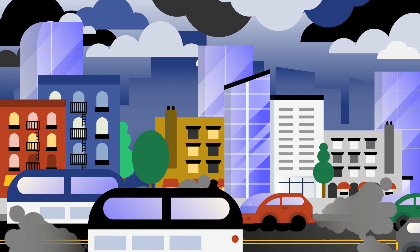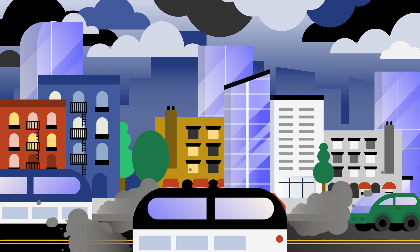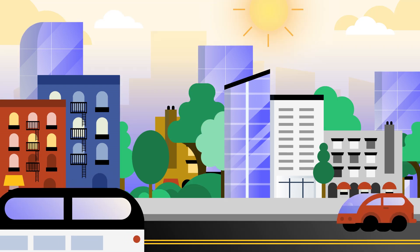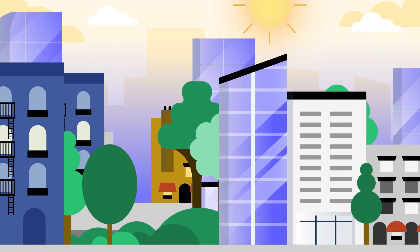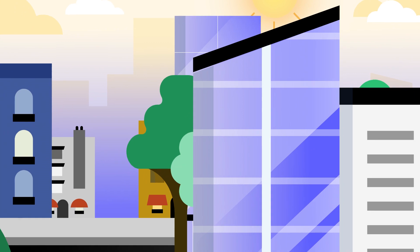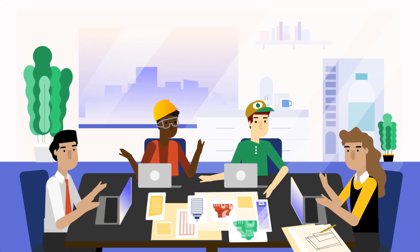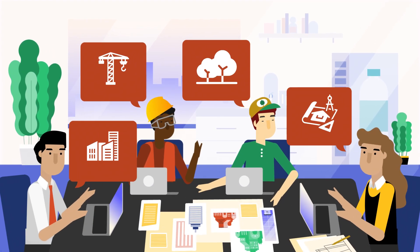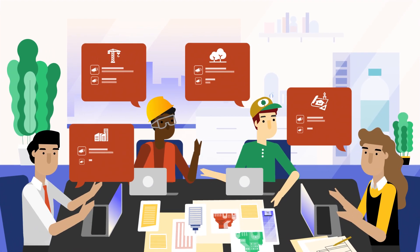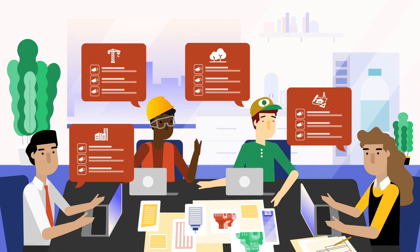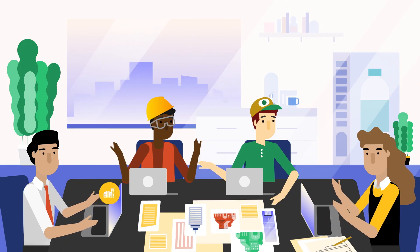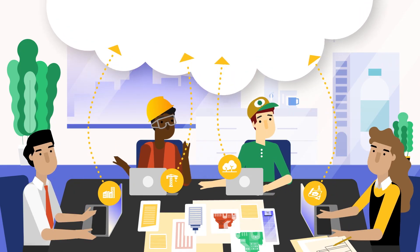How can you design a city so that it's not only more livable, but better for the environment and better for the planet? In urban planning projects you get a lot of data, a lot of community involvement, and a lot of times it's really tricky to balance those different goals and objectives.